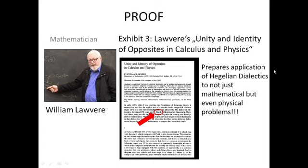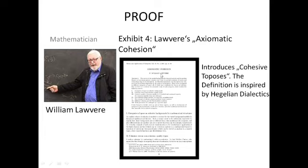Exhibit three, Lawvere's paper, Unity and Identity of Opposites in Calculus and Physics. Again, we have here a paper by Lawvere, where he's mostly talking about category theory, and he's talking about how to apply category theory to physics. And again, on the first page, we instantly see here the name of Hegel. We see that Lawvere is trying to pull Hegelian philosophy over and apply it to physical problems. Exhibit four, Lawvere's paper, Axiomatic Cohesion, where Lawvere introduces the notion of cohesive topos, which we will see in a moment in the string theory papers. And the definition is heavily inspired by the Hegelian dialectics.